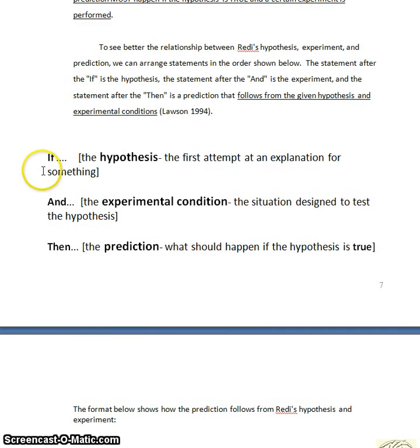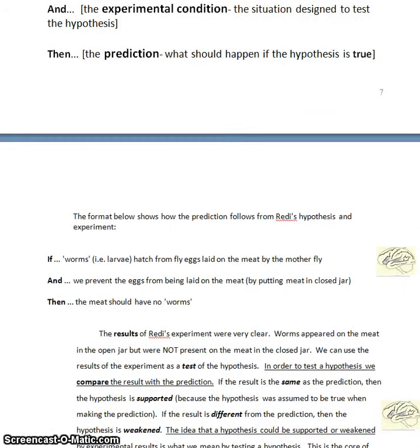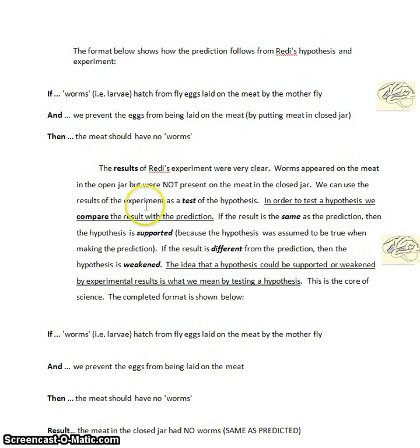You'll remember that the thinking format that we're going to use is the if-and-then format. Next to the if, we put the hypothesis. That's our first attempt at the explanation. Next to the and, we put the experimental condition. What are we doing to test the hypothesis? After the then, we put the prediction. What should happen if the hypothesis is true? So let's see how it applies to Redi's condition.